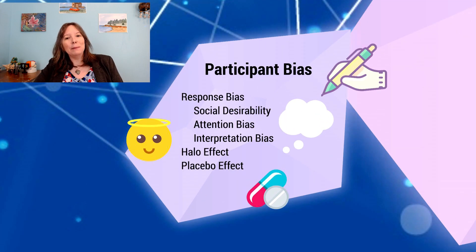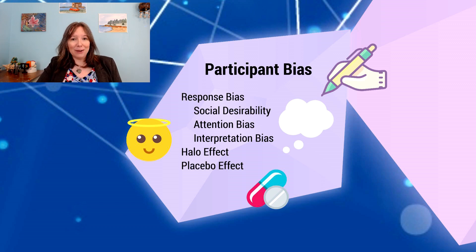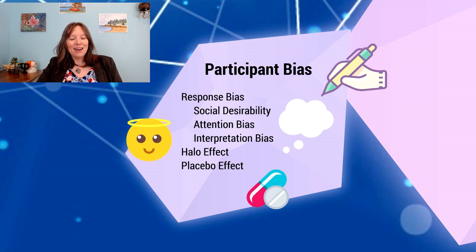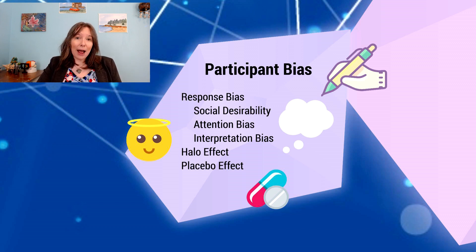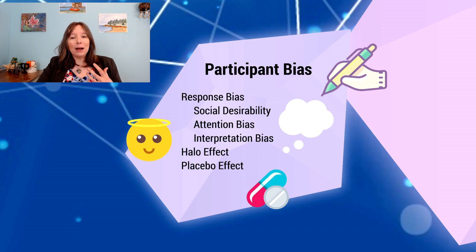We also need to think about participant bias. Sometimes participants really want to help with our research — to the point where they try to figure out our hypothesis and answer accordingly to prove our study right. This can lead to major response biases where participants are not being completely truthful or are exaggerating on measures. For example, perhaps someone wants to prove that cannabis is dangerous in a driving simulator, so they think they have the cannabis brownie and then intentionally crash.